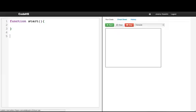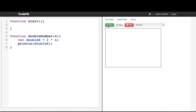First, what I'm going to do is write the double number function again. Function double number, and the parameter that it takes is x. I'll write var double x equals 2 times x. Now double x has twice the value as x. Now I'm going to print line double x. If I run this program, nothing is going to happen. Nothing is in the start function.